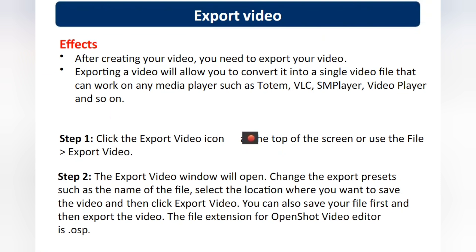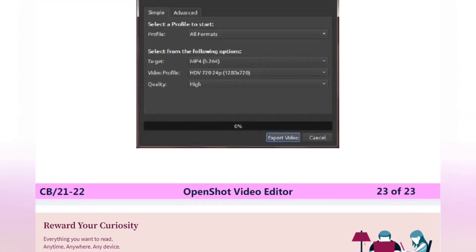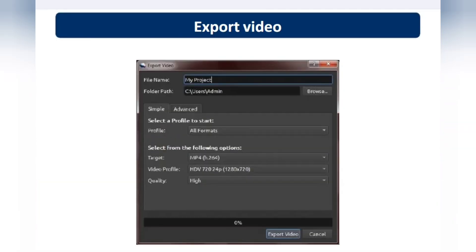To export the video, click the export icon. Export means sending or sharing the video to another person or on another computer. You must also give a name to your project — for example, if you are creating a video of a particular cartoon or object, give it a name for better understanding of what you are creating.